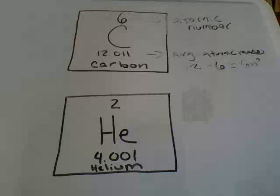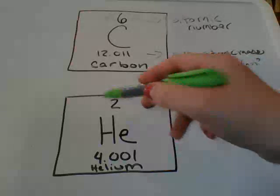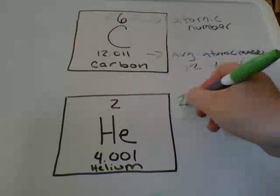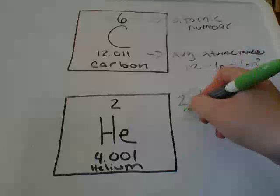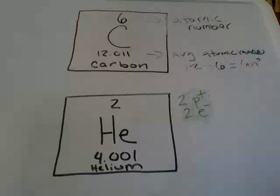Okay, let's do the same thing for our helium symbol. We can see that at the top our atomic number is 2. That tells us that we have 2 protons and 2 electrons in a neutral atom.